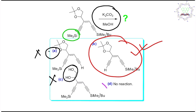For a quick exam strategy (under 30 seconds): identify the condition — it's a basic medium. Identify the functional groups — ketal, alkyne, alkene, and silane. Ketal, alkyne, and alkene are stable in basic medium, so silane will react. Which silane reacts? Obviously the least bulky one. For the complete concept, please visit the main video linked in the description.